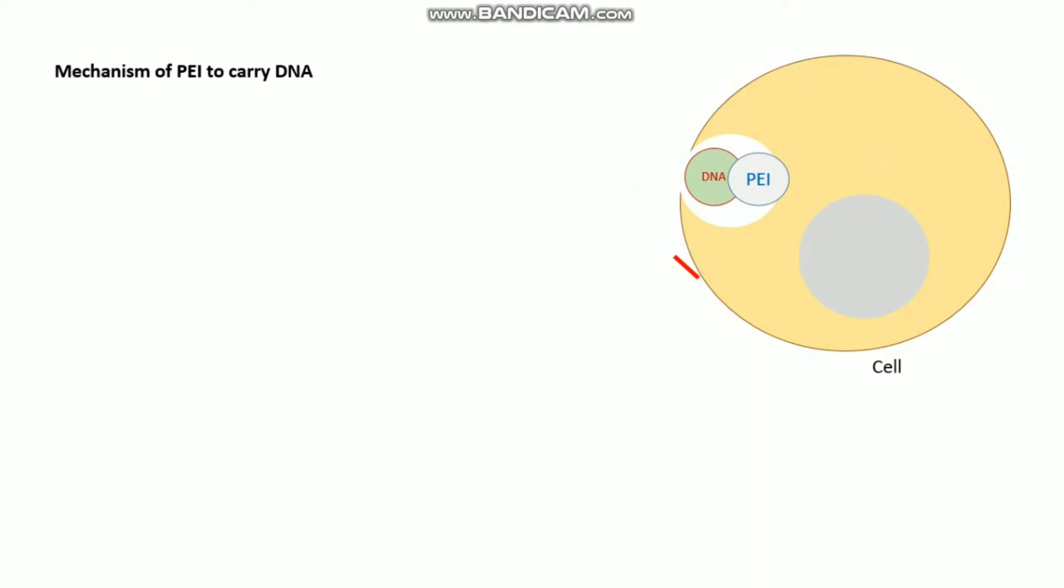Once this complex gets inside the cell, by osmotic swelling these vesicles burst and as a result this complex is released into the cytoplasm of the cell. By unpacking of the DNA from this complex, then it diffuses to the nucleus.